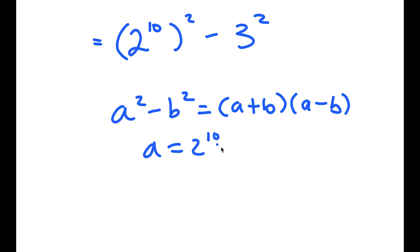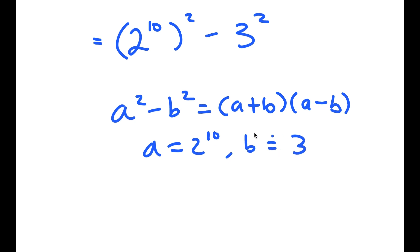So in this case, a is 2 to the power of 10 and b is 3. So I get 2 to the power of 10 plus 3 times 2 to the power of 10 minus 3.